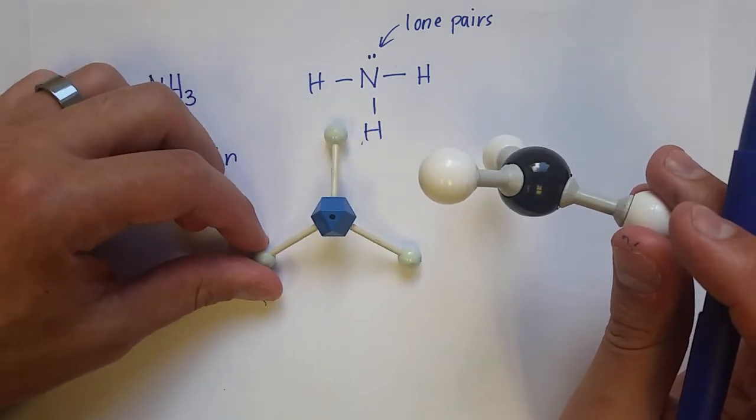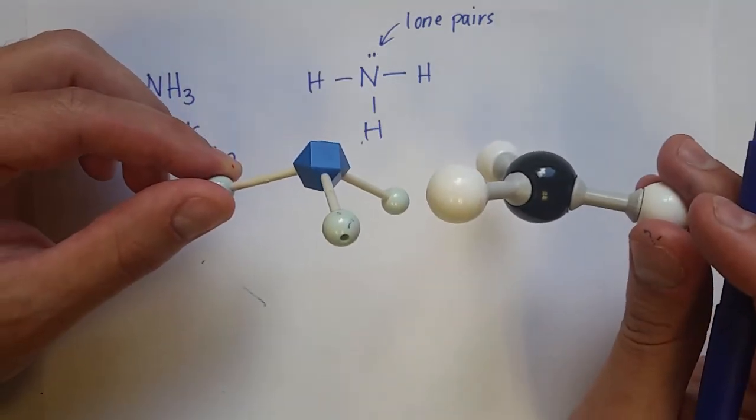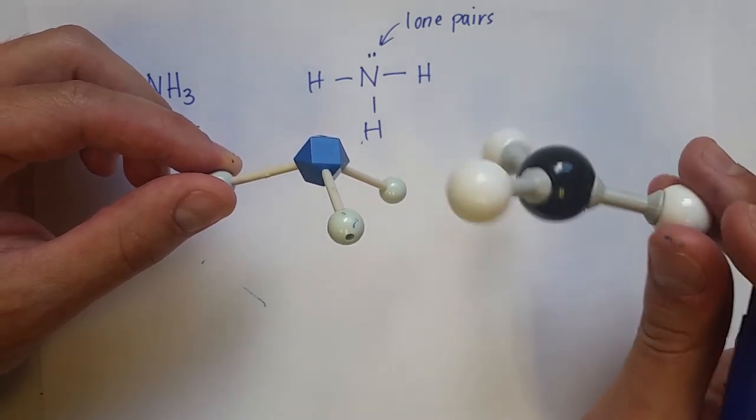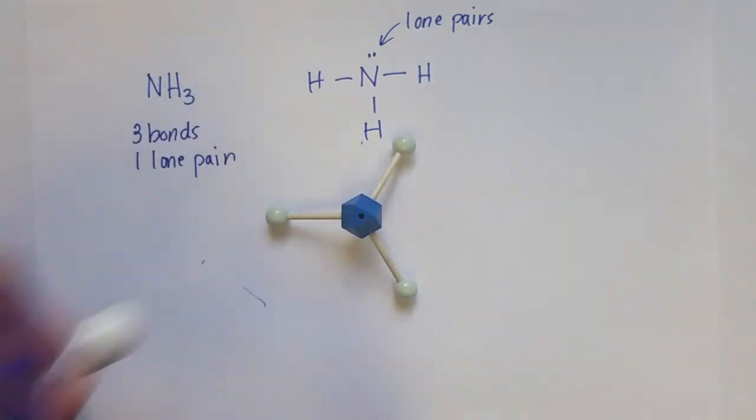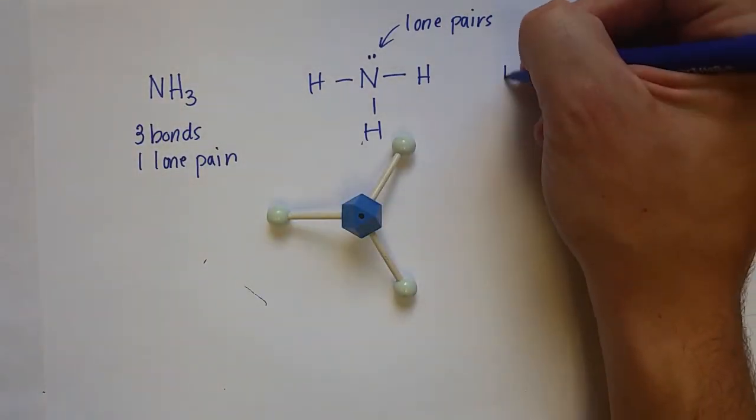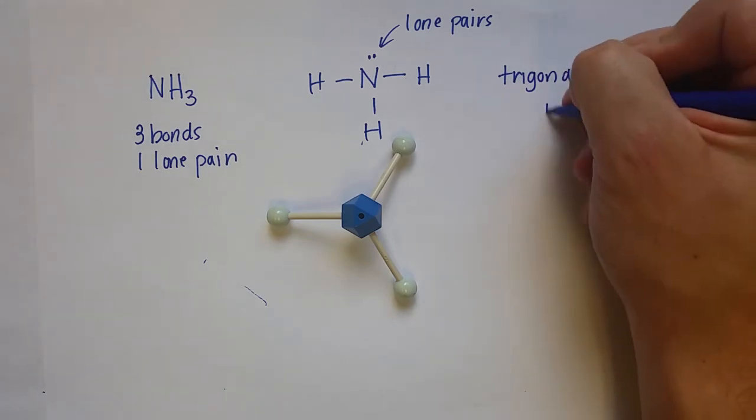It still looks like a triangle if you look straight down, but the four atoms are all not in the same plane like they are for trigonal planar molecules with three bonds. And so this is trigonal pyramidal.